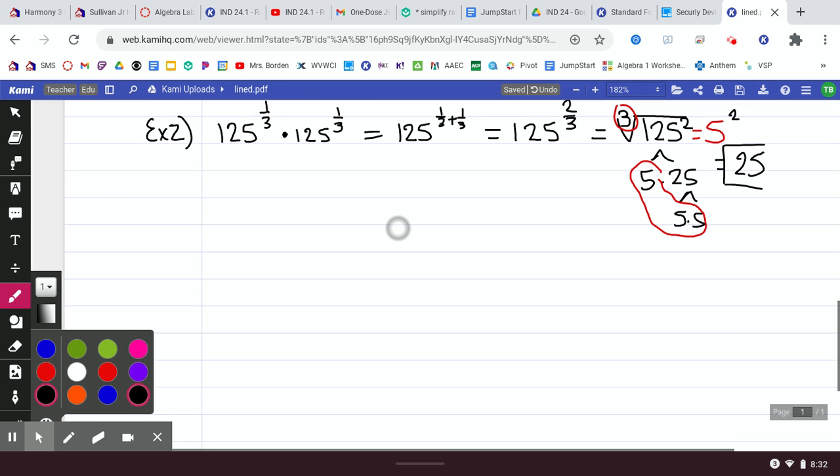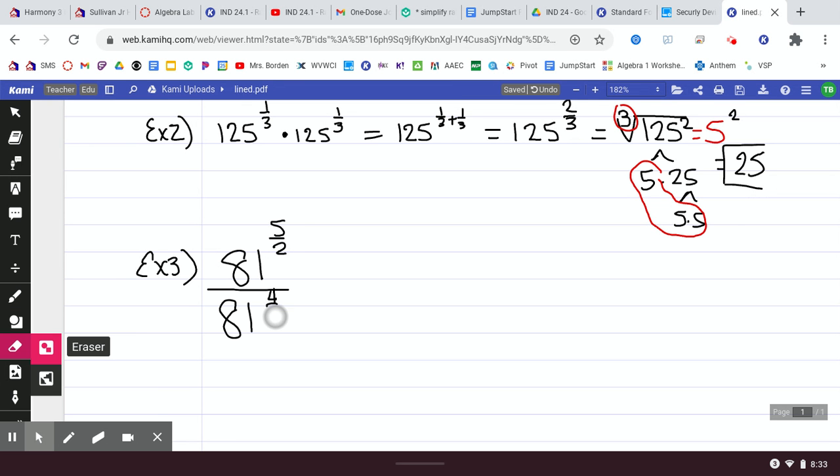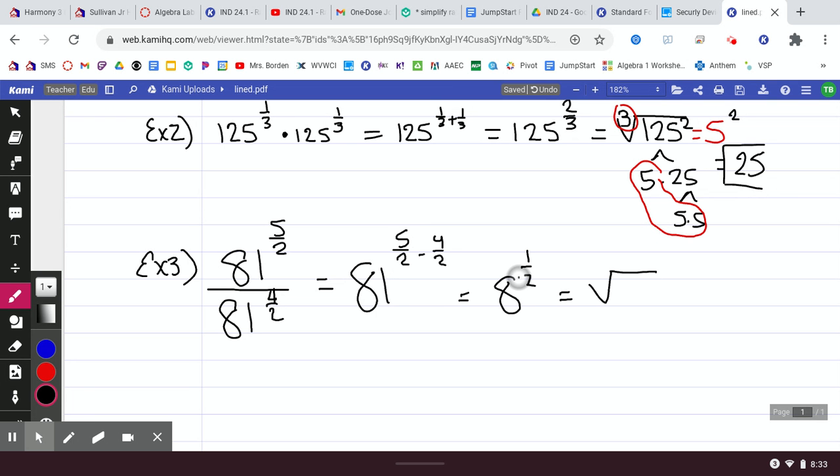Let's look at a division problem. So, if we have 81 to 5 halves over 81 to 4 halves. My bases are the same. So, that means I'm going to keep my base. And because it's a division problem, I'm going to subtract 5 halves minus 4 halves. And I get 81 to 1 half. Now, I put this in radical form. 81. My root is 2. My exponent is 1. Square root of 81 is 9.